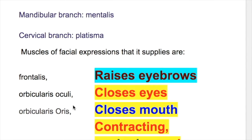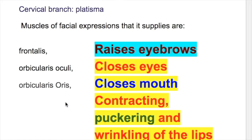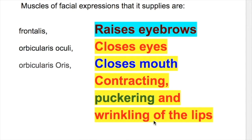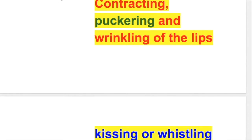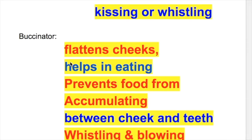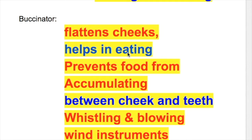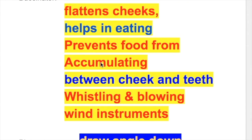The functions of these muscles of facial expression are as follows. Frontalis raises the eyebrow. Orbicularis oculi closes the eyes. Orbicularis oris closes the mouth, with puckering and wrinkling of the lips used in kissing or whistling. Buccinator flattens the cheeks, helps in eating, prevents food from accumulating between cheeks and teeth, and is used in whistling and blowing wind instruments.